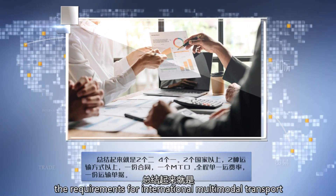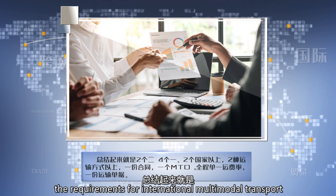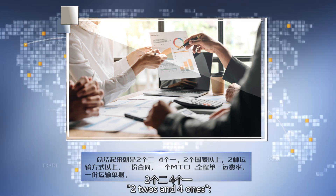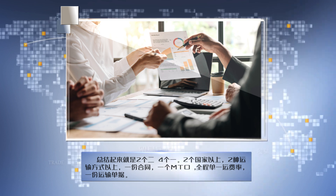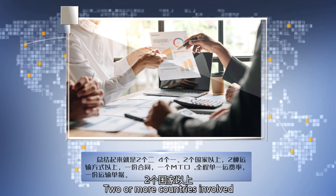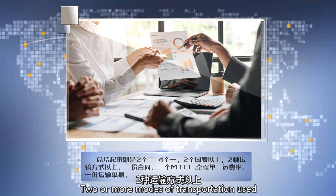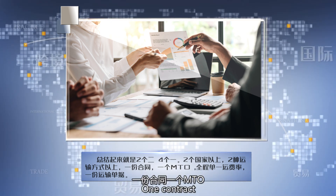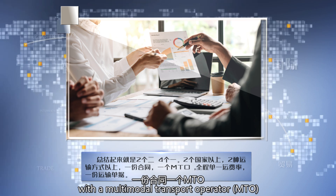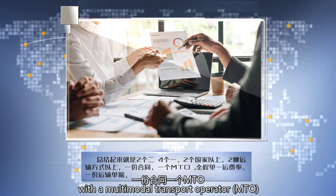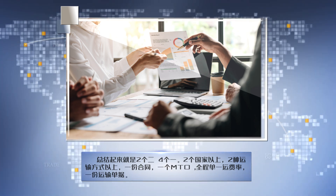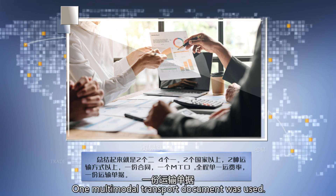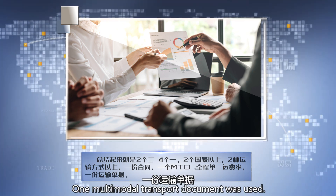In summary, the requirements for international multimodal transport can be summarized as two twos and four ones: two or more countries involved; two or more modes of transportation used; one contract with a multimodal transport operator; one unified freight rate applied; and one multimodal transport document used.